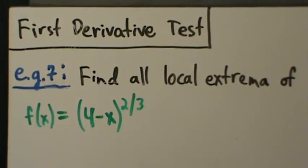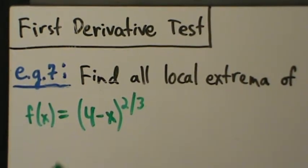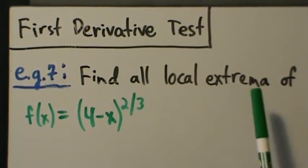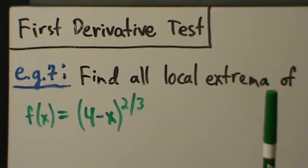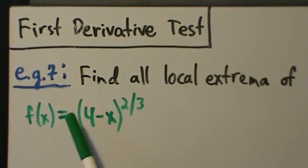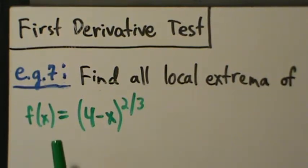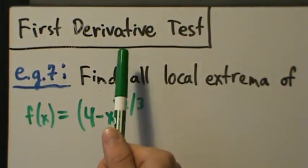This is example seven using the first derivative test to find all local extrema of a function. Our function is f(x) = 4 minus x to the two-thirds, and we're going to find all the local extrema of this function by using the first derivative test.